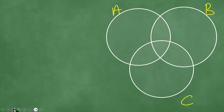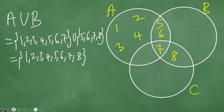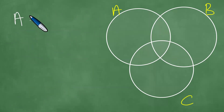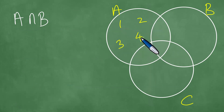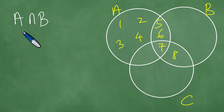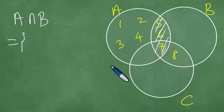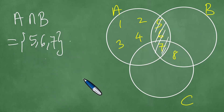Next, we find A intersection B. A intersection B contains the elements that are in both A and B simultaneously. A has 1, 2, 3, 4, 5, 6, 7 and B has 5, 6, 7, 8. So A intersection B has the elements 5, 6, and 7.